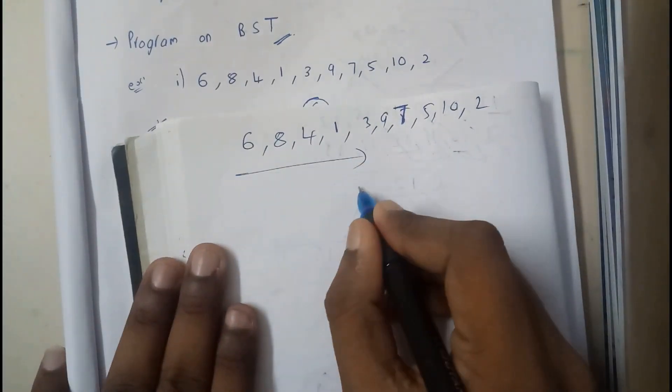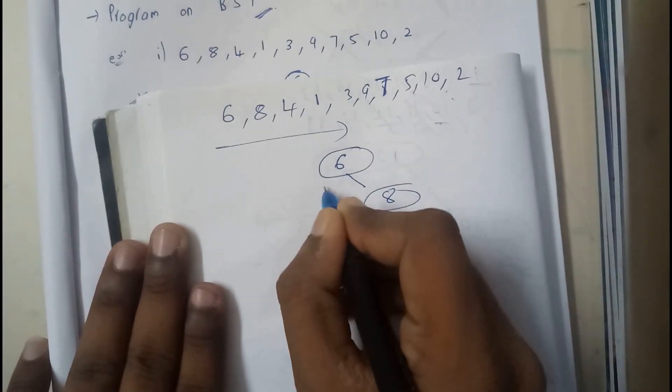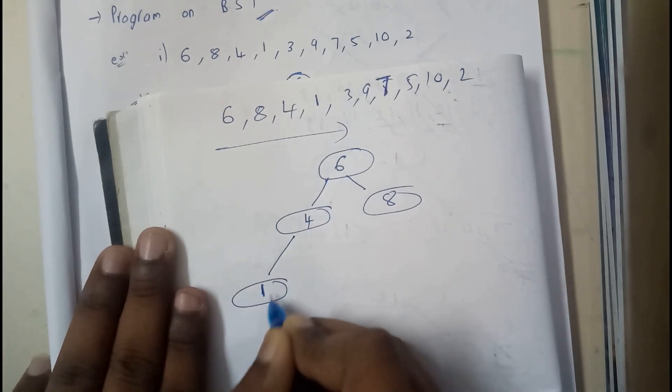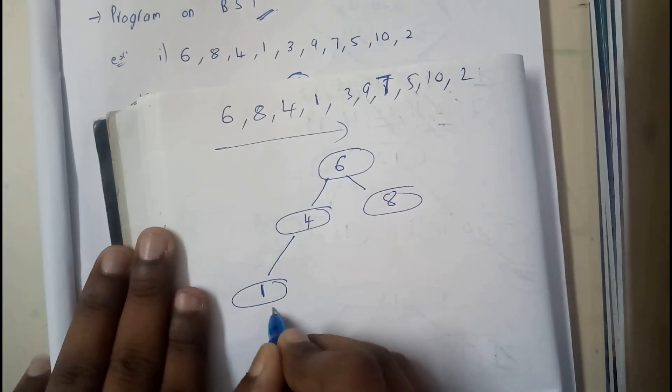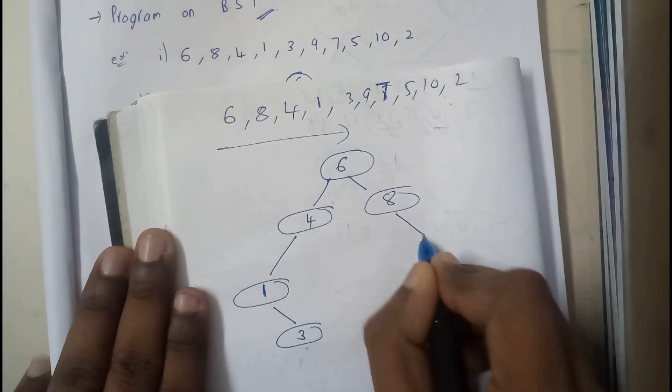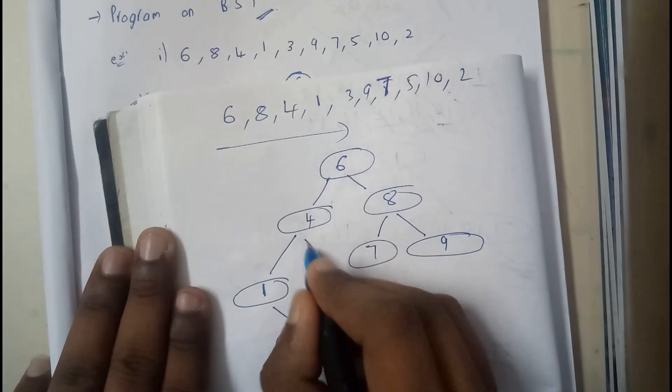So now this is the given question. So basically, I'll be starting with 6. 8 is greater, so on the right side. Again, 4 is lesser than this, on the left side. 1 is lesser for this. 3 is greater for this, right. And next 9, 9 will be going directly. 9 is greater. 7, 7 will be here. Next 5, 5 will be here. Fine.